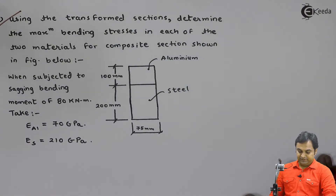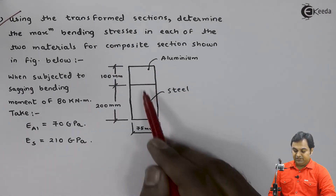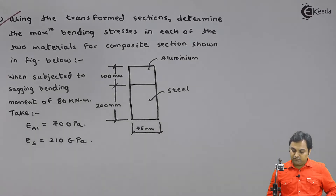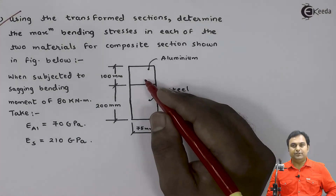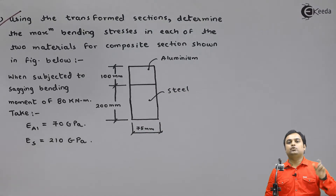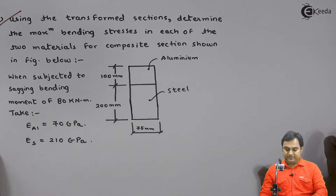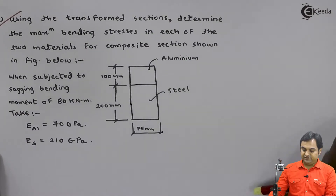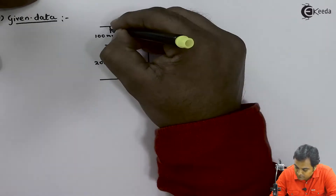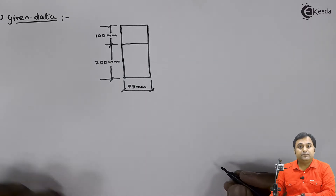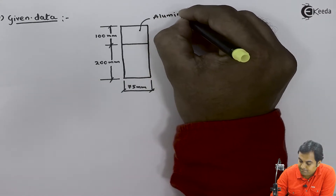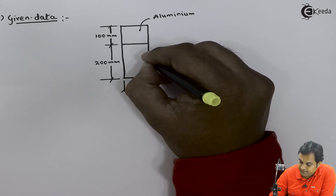We are asked to calculate the maximum bending stresses in each of the materials. For this kind of question, we either convert steel into complete aluminium or convert aluminium into steel — making the section uniform throughout. First, I will write the data given: two different materials — aluminium at the top and steel at the bottom.